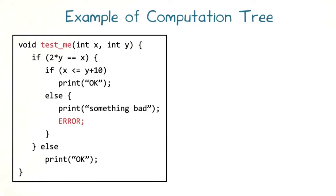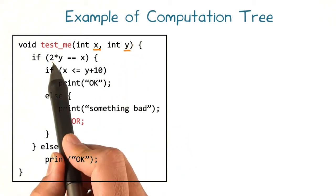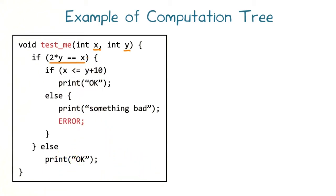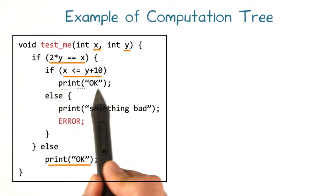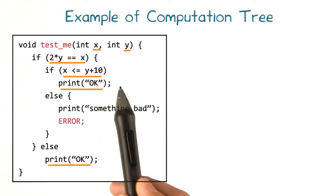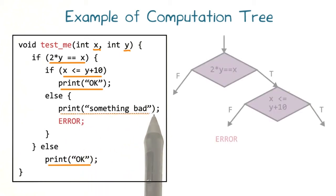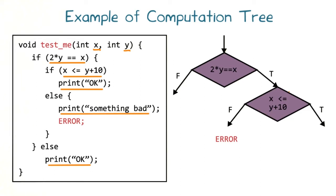Let's start with a comparatively simple computation tree corresponding to the program TestMe. The program takes as input two integer variables x and y. It first tests whether 2 times y equals x. If 2 times y is not equal to x, then the program exits normally. But if 2 times y equals x, then the program proceeds to test whether x is less than or equal to y plus 10.